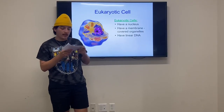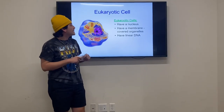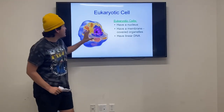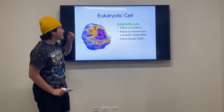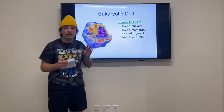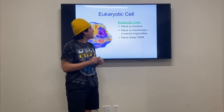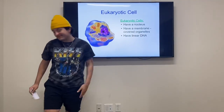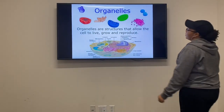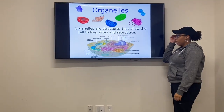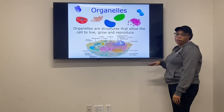The eukaryotic cell is the type that animals and humans have. As you can see, there are little things inside the cell called organelles, and these organelles are like little workstations in the cell that make it function. Organelles are the structures that allow the cell to live, grow, and reproduce.